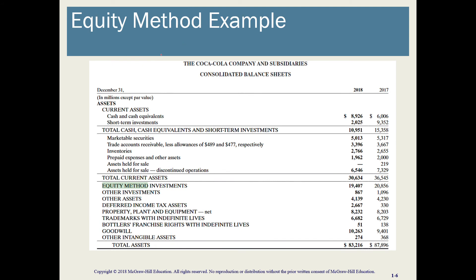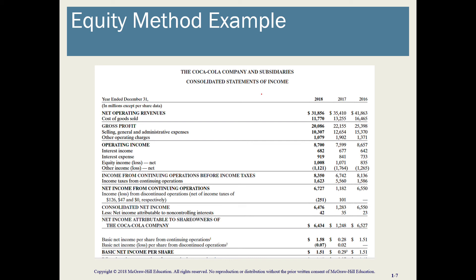I wanted to show a real-world example from Coca-Cola's annual report of how these investments are reported. You can see equity method investments reported in their consolidated financial statements under total assets as long-term assets. On the income statement, we have the net effect of the equity method investments — the company had net income from many equity investments, which are summarized for reporting purposes on the financial statements.